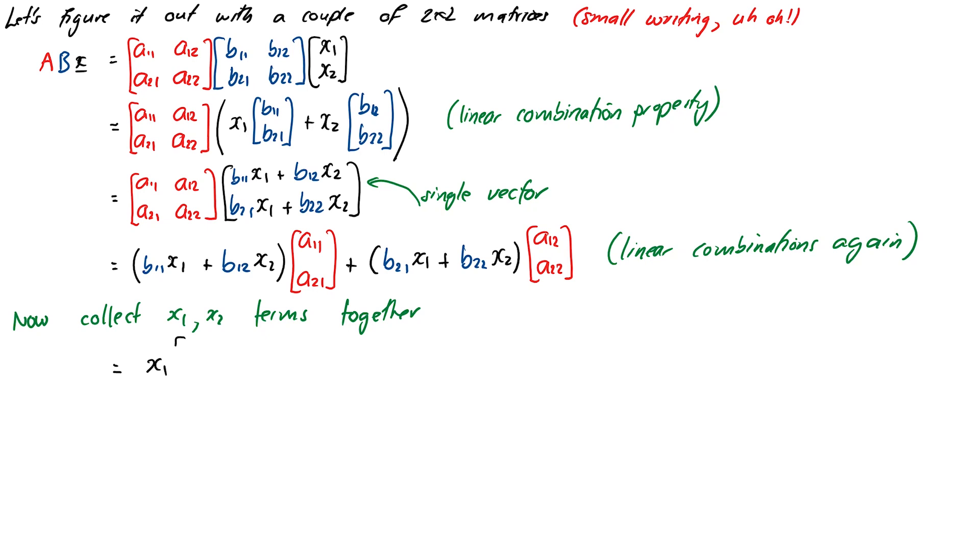I'm going to hunt down all the x1s and write the things that multiply them as single vectors. That will be x1 times [b11*a11 + b21*a12; b11*a21 + b21*a22]. Now I'll hunt down everything multiplying x2, getting [b12*a11 + b22*a12; b12*a21 + b22*a22].